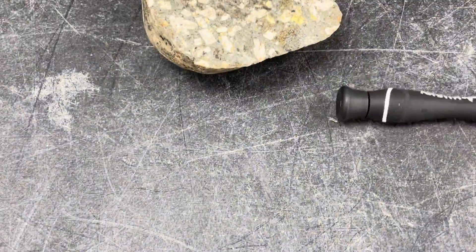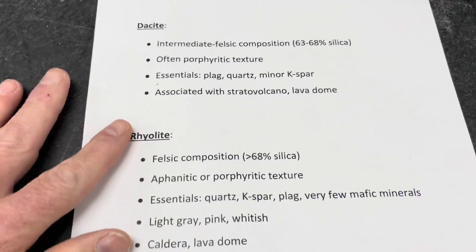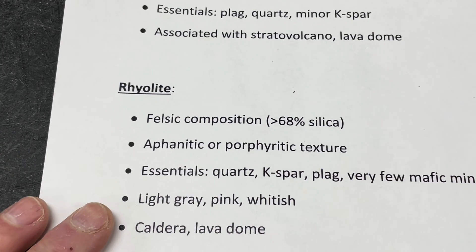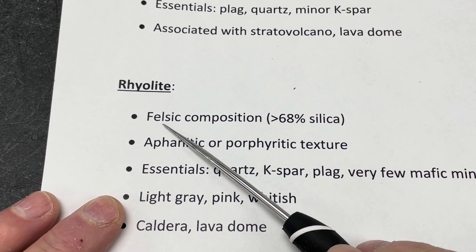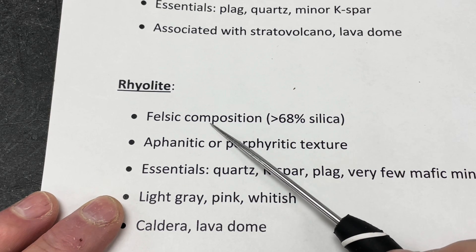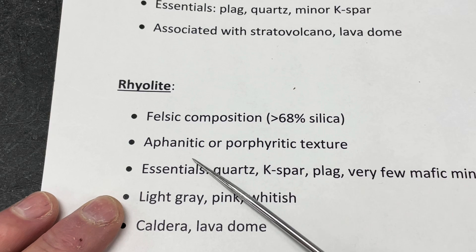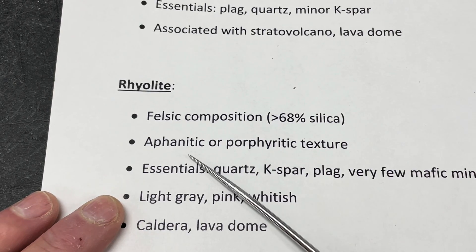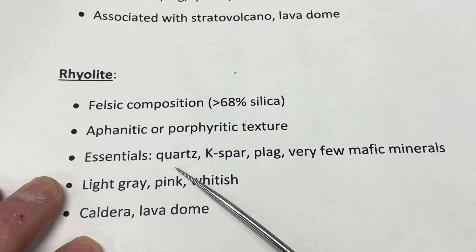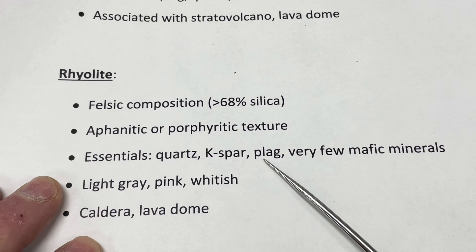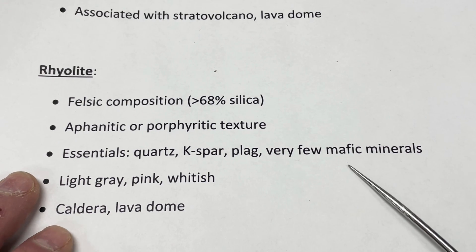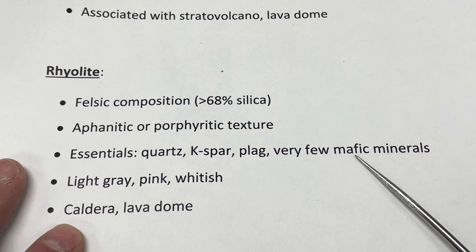To wrap up, our last rock today is rhyolite. Rhyolite is our most silica-rich volcanic rock, felsic in composition and dominated by light-colored minerals with very few dark mafic minerals. Texture-wise, it can be porphyritic or aphanitic; in my experience rhyolites tend to be a little less porphyritic than andesites and dacites. The essential minerals are quartz, K-feldspar, and some plagioclase, though plagioclase is more secondary here. Mafic minerals are minor — probably 20% or less.